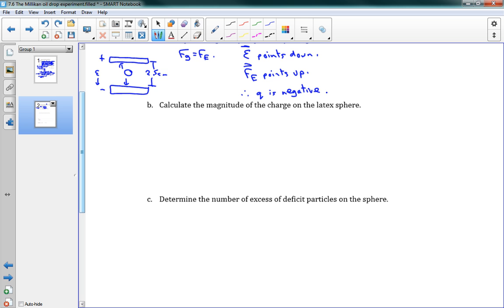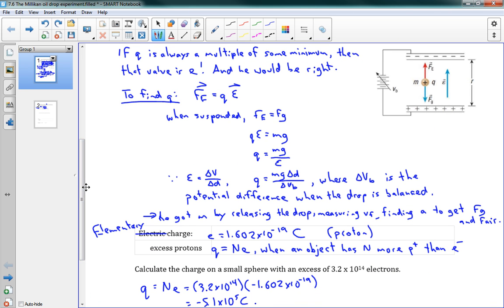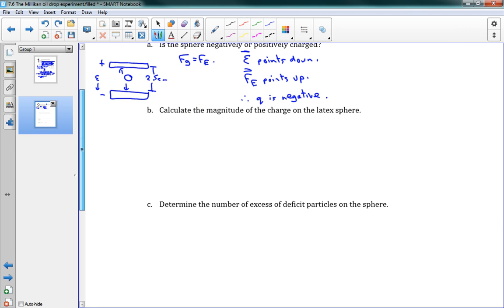All right, so that's part A. Part B, we want to calculate the magnitude of the charge on the latex sphere. Well, I'm going to use the equation from the previous page. Q is mg ΔD over ΔVB. This is what I'm going to use here. So this is when everything is balanced. Q is equal to mg ΔD over ΔVB. And we can put in our numbers. 1.41 times 10 to the negative 15 times 9.8 times 2.5 times 10 to the negative 2. Divide all of that by 360 volts, and we get 9.596 times 10 to the negative 19 coulombs.